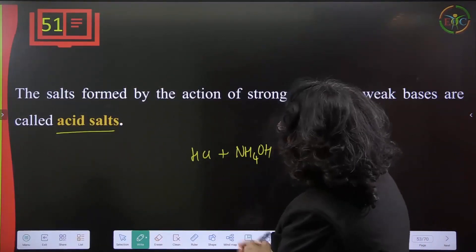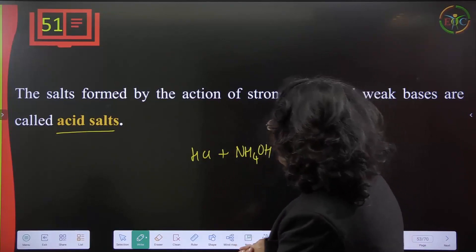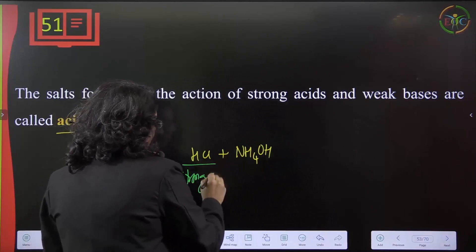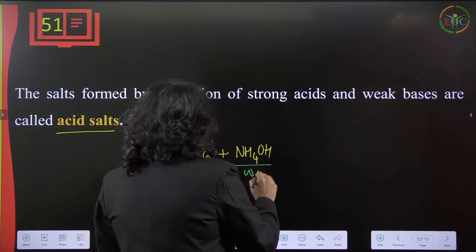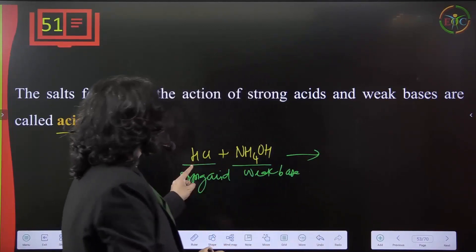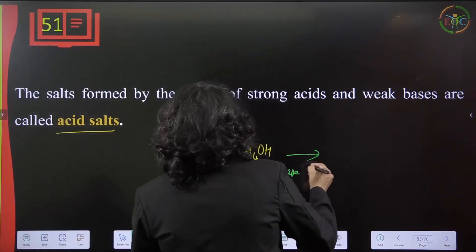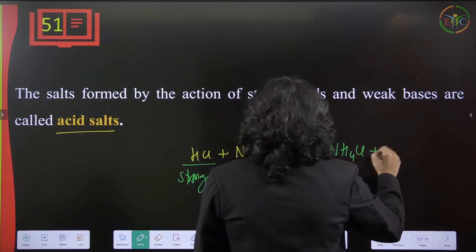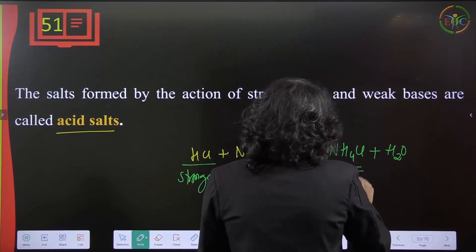The salt formed by the action of a strong acid and weak base is called an acidic salt. For example, hydrochloric acid (strong acid) reacts with ammonium hydroxide (weak base), and because the acid is strong, more H⁺ ions are present. The product is ammonium chloride plus water — this salt is called an acidic salt.